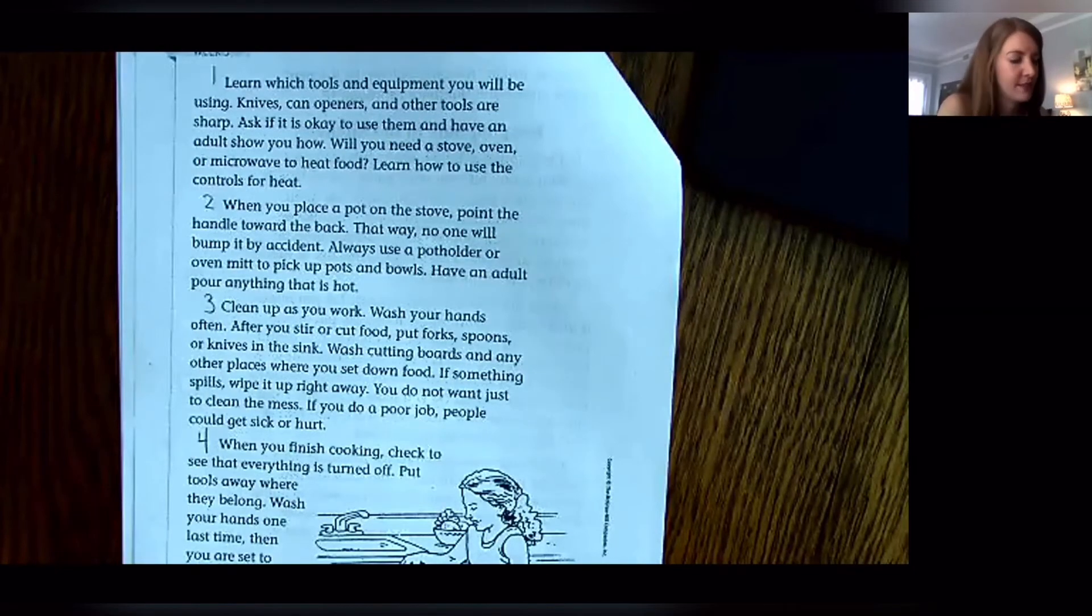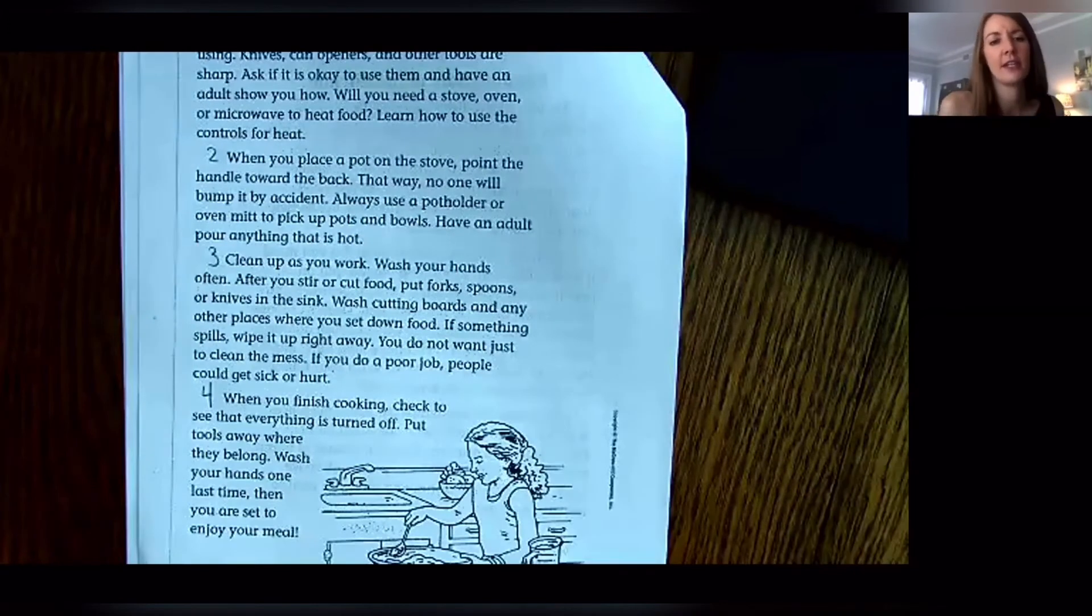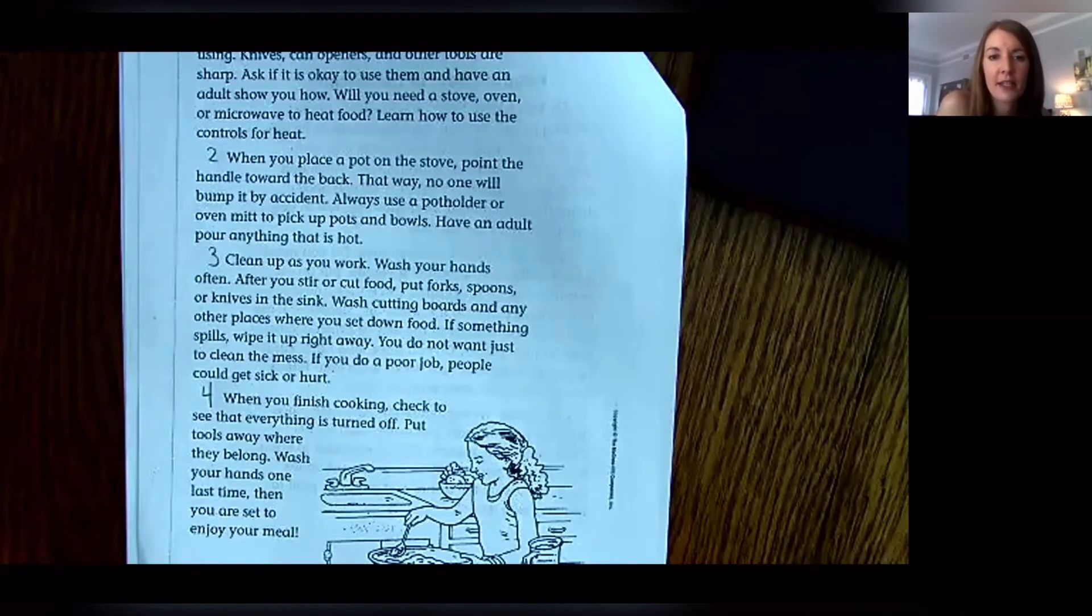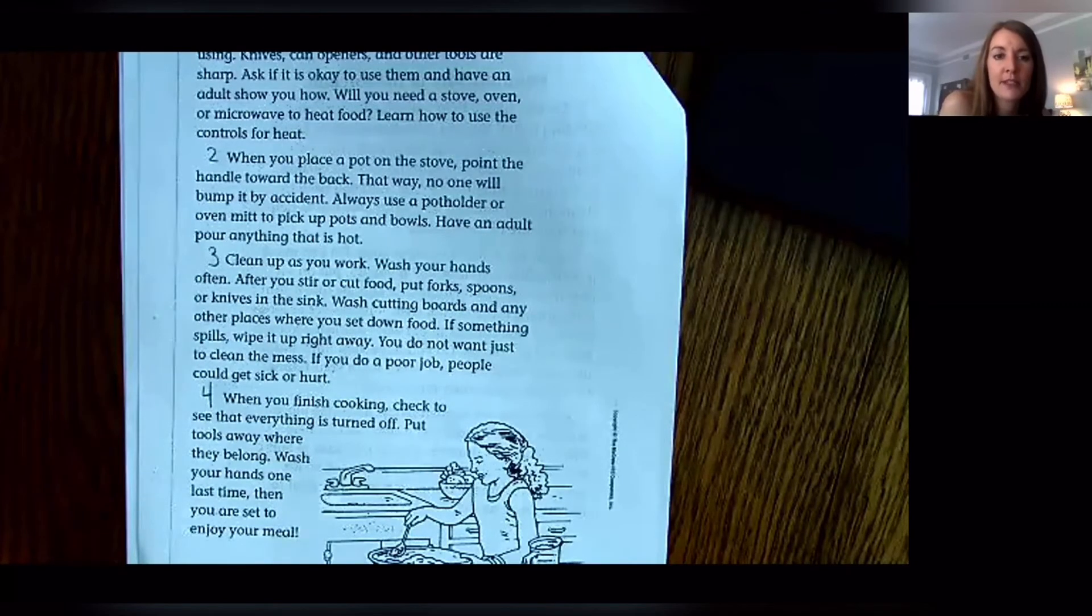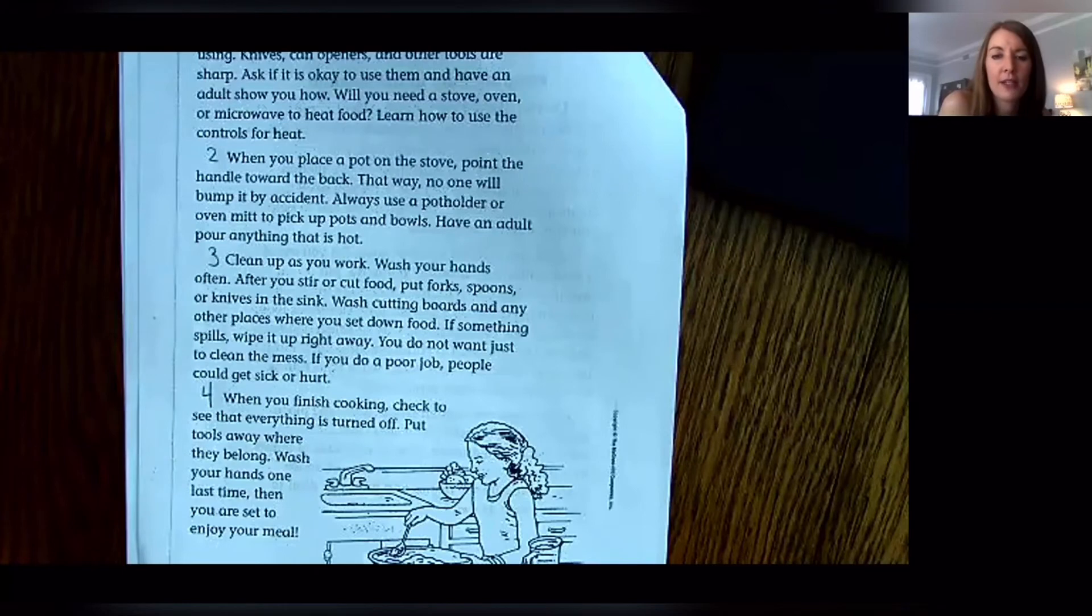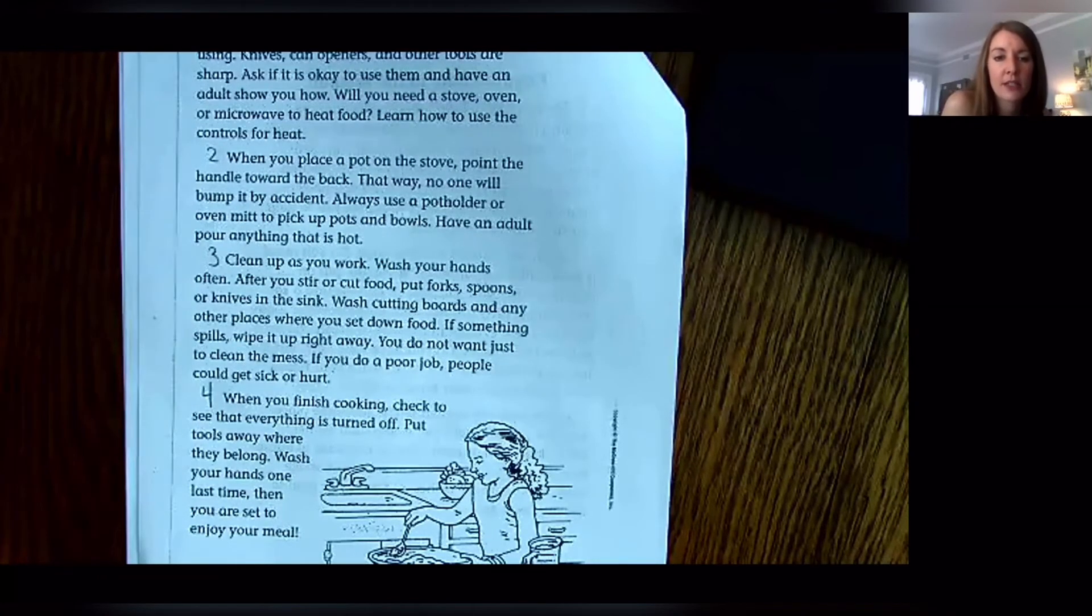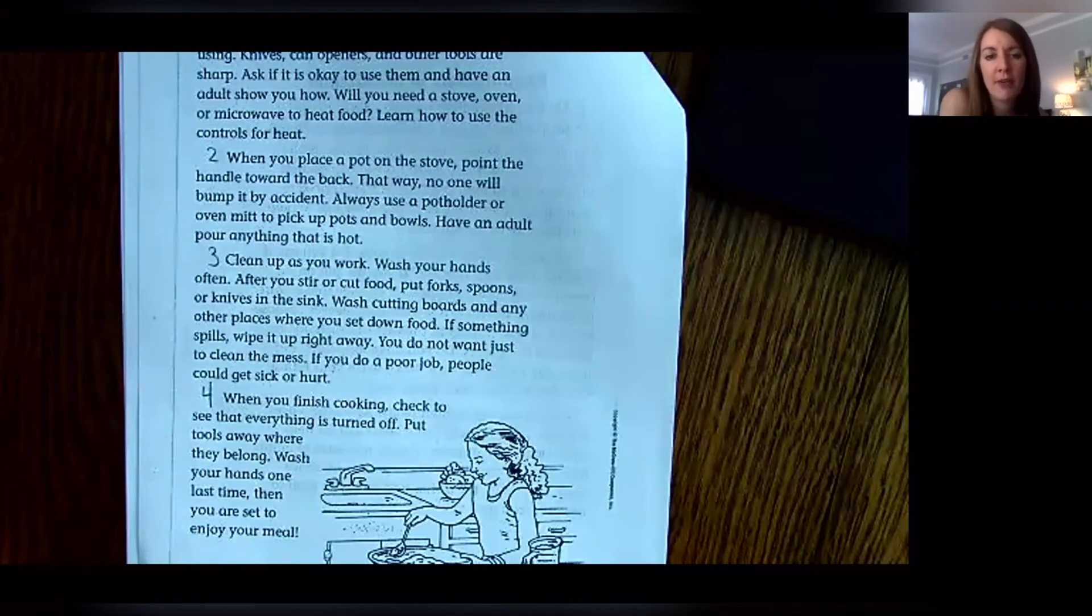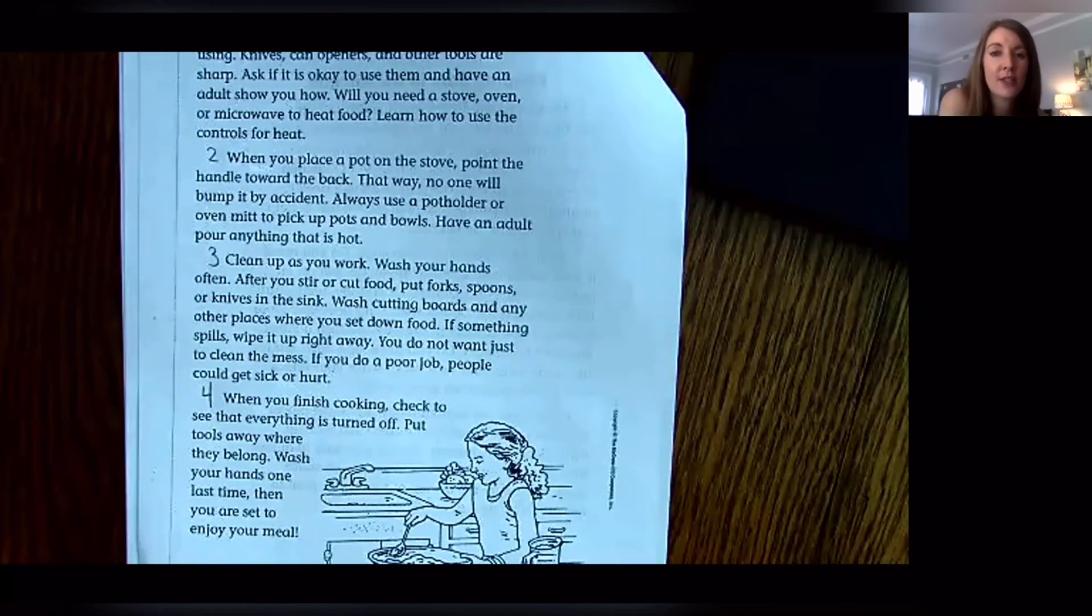Clean up as you work. Wash your hands often after you stir or cut food. Put forks, spoons, or knives in the sink. Wash cutting boards and any other places where you set down food. If something spills, wipe it up right away. You do not want just to clean the mess. If you do a poor job, people could get sick or hurt. When you finish cooking, check to see that everything is turned off. Put tools away where they belong. Wash your hands one last time. Then you are set to enjoy your meal.